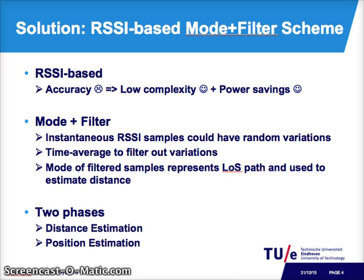The scheme we have implemented is RSSI-based — we've traded off accuracy for low complexity and power savings. We've improved accuracy by time-averaging RSSI samples to filter out random variations due to noise, interference, and shadowing, then taking the mode of the filtered samples to estimate distance, as this most likely represents the line-of-sight path. This scheme is implemented in two phases: distance estimation and position estimation.